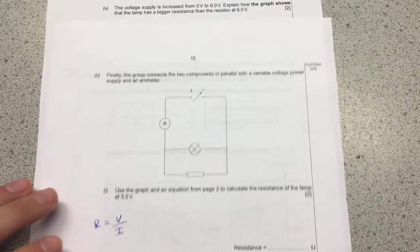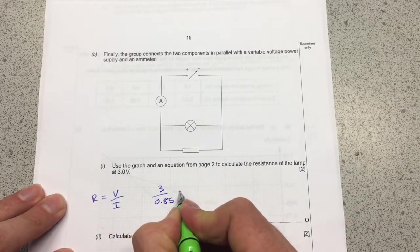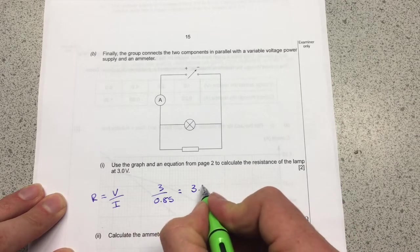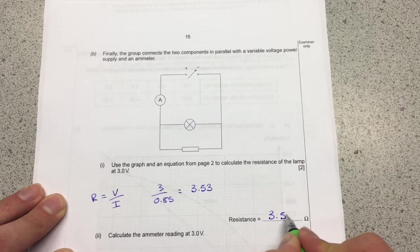Flip that over again. So three volts over 0.85 into the calculator that goes and it tells me 3.53. Be careful of your rounding. So that goes on the answer line there.